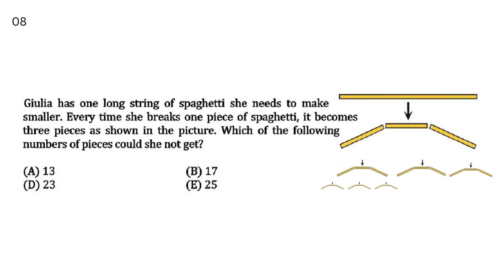Gilia has one long string of spaghetti. She needs to make smaller. Every time she breaks one piece of spaghetti, it becomes three pieces as shown in the picture. Which of the following numbers of pieces could she get? Gilia has one long string of spaghetti that she needs to break into smaller pieces. When she breaks it, one piece becomes three pieces as shown in the picture. Which of the following numbers could she get? Your answer is C, 20.